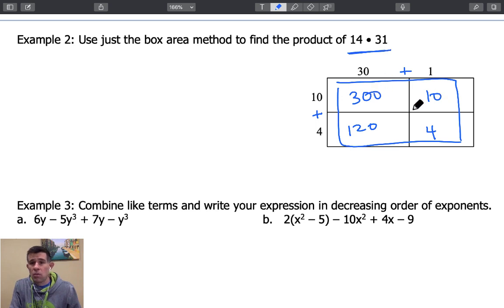That's 300, 130, and 4. So 300, 130, and 4 gives us 434 for the product of 14 times 31.